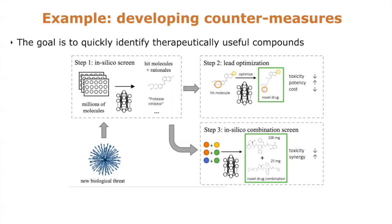We also take this a step further — not only searching from among existing compounds, but learning to computationally redesign those compounds to have better properties, so that they are more potent, lack toxicity, and so on. In parallel, we are searching not only individual compounds as viral cures, but also combinations of drugs that would have synergistic activities.